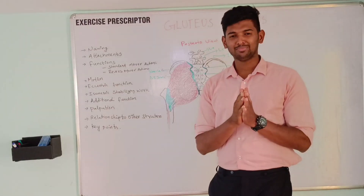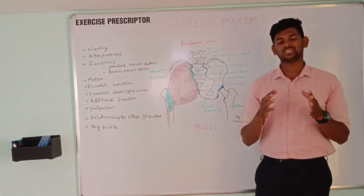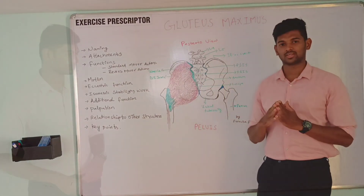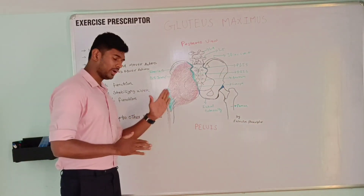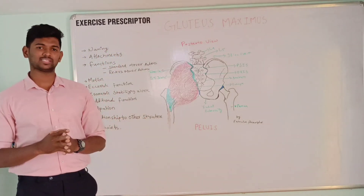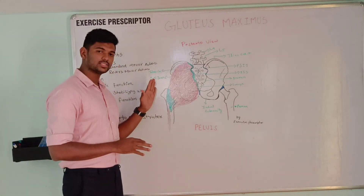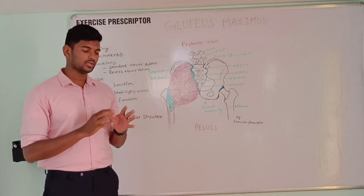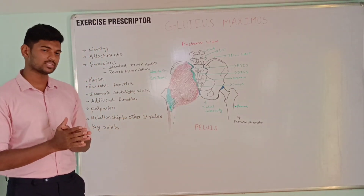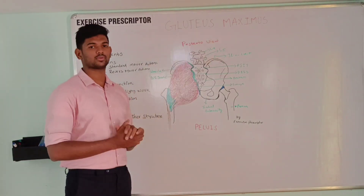Welcome to the scientific series of muscles. I am going to start with gluteus maximus. Why is this muscle called gluteus maximus? Because it is presented over the gluteal region and is one of the largest muscles over that region, so it is called gluteus maximus.